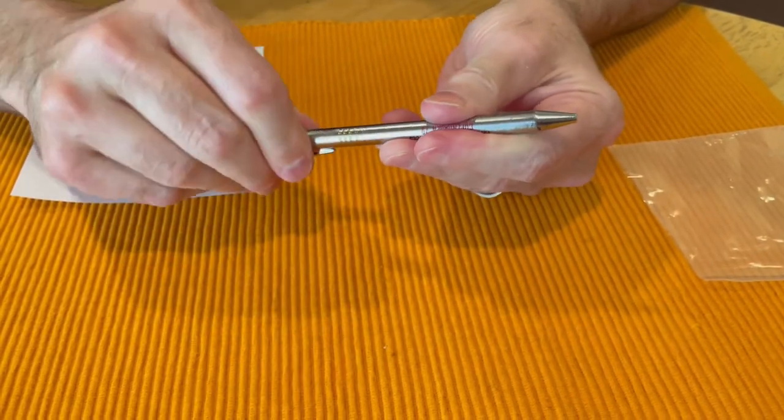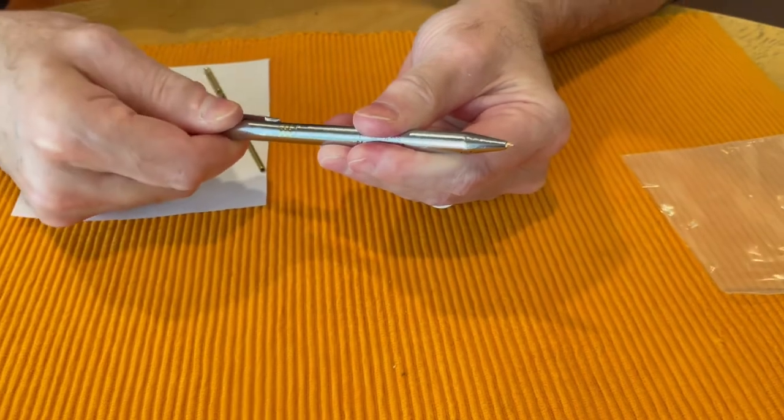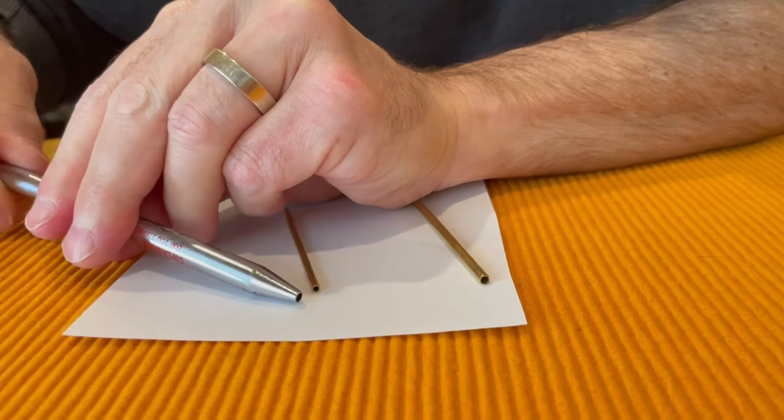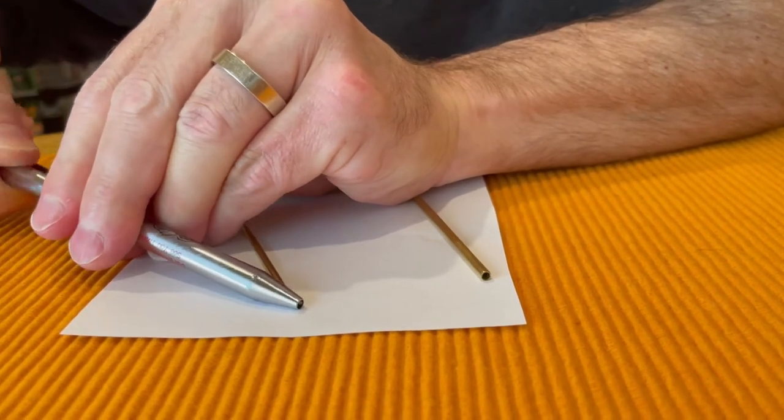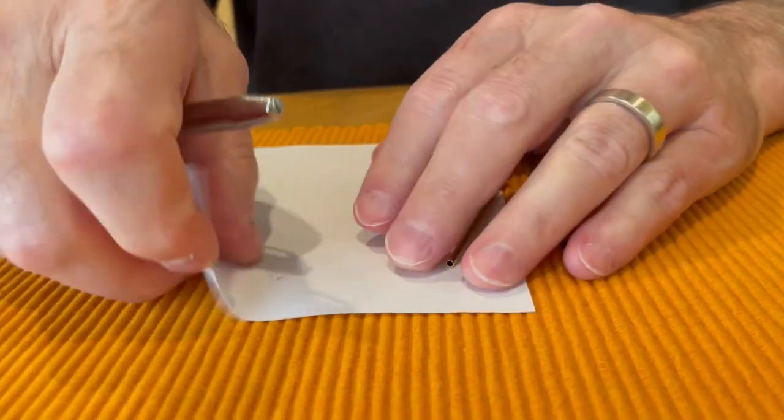And now you check it out. See, look at the tip. See like this, you could see it working. Okay, twist one way, twist the other way and then we could try writing.